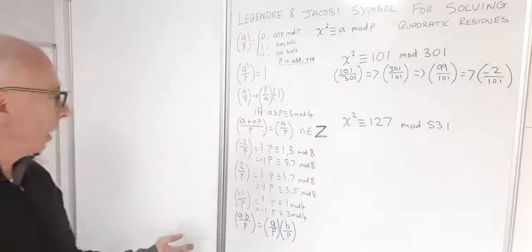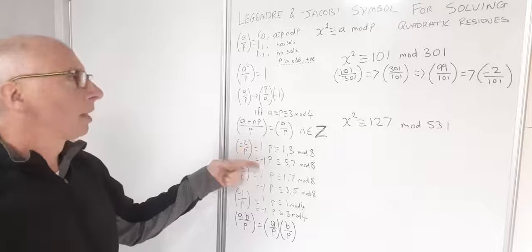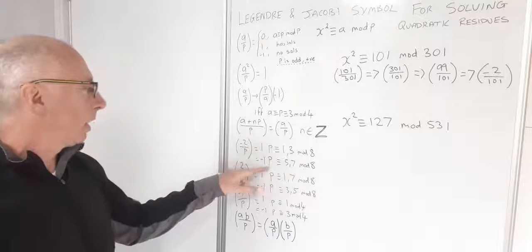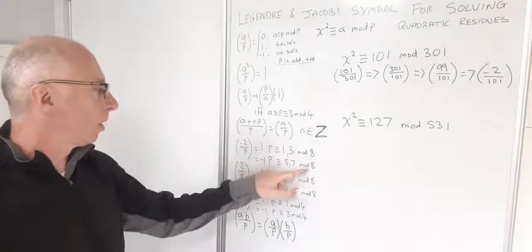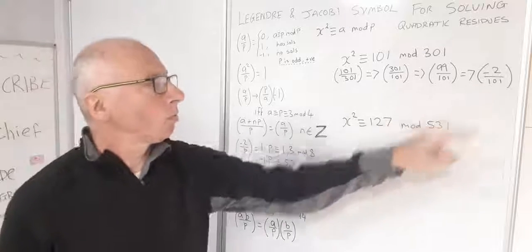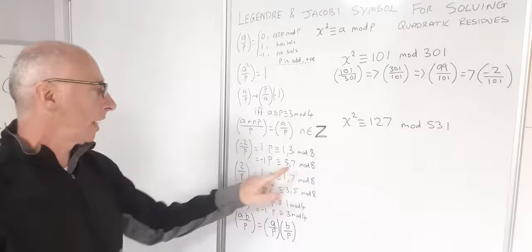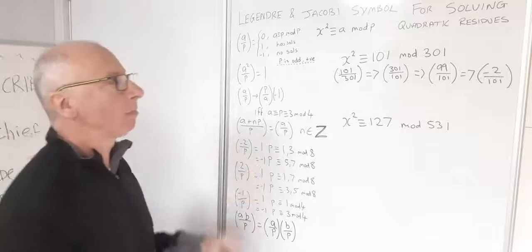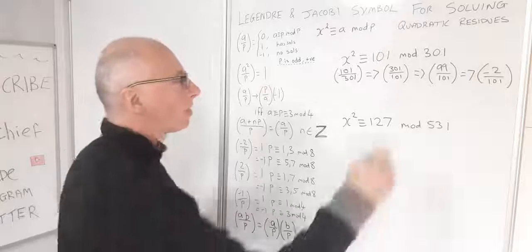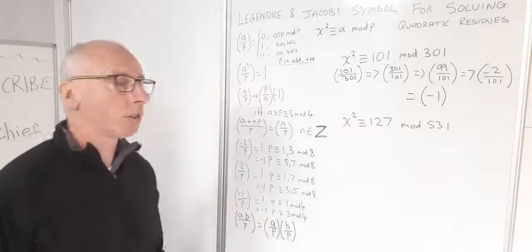This brings me to the rule for (−2/p): if p ≡ 1 or 3 mod 8, the answer is 1; if p ≡ 5 or 7 mod 8, the answer is −1. Well, 101 is congruent with 5 mod 8, so the answer is −1. Therefore this does not have a solution.